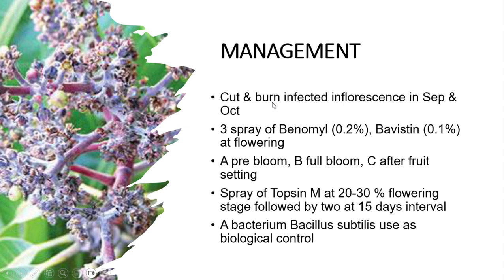Apply 3 sprays of Bavistin and Bayleton at the pre-bloom stage, full bloom, and after fruit setting. Spray Topsin-M at 20 to 30% flowering, followed by two more sprays at 15-day intervals.